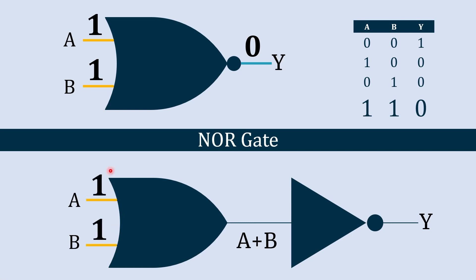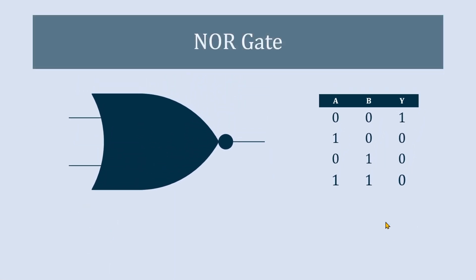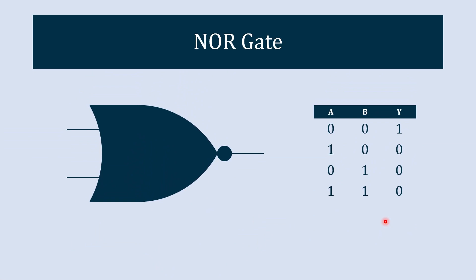How is it like this? When both the inputs are 1, the output of OR gate is 1 and this will invert it and gives us 0 in output. So this is the truth table of NOR gate and that's how it functions.